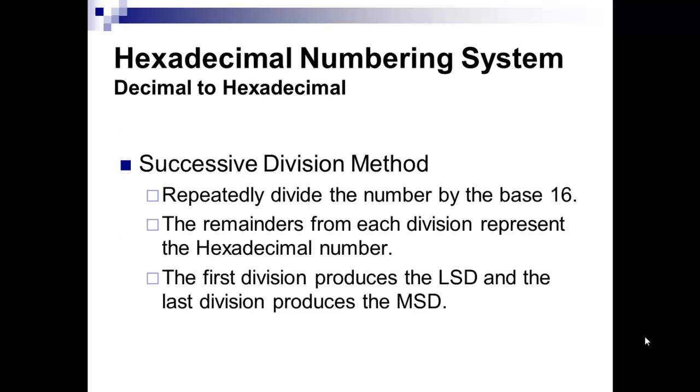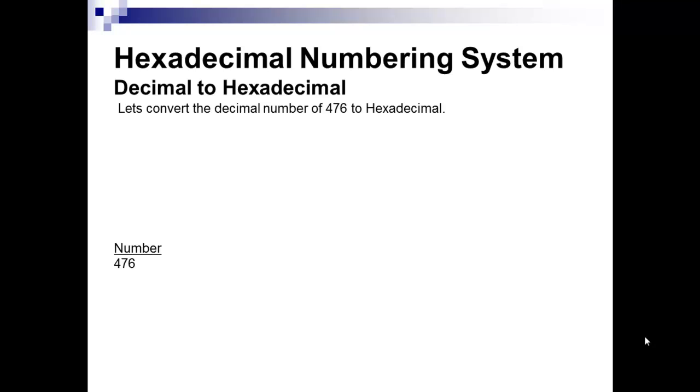We're going to go to decimal to hexadecimal. And again, for these, any time you go decimal to hexadecimal, successive division is probably the easiest way to go. So since this is base 16, we're going to take that number 476, which is the number we're going to convert, and we're going to divide by 16s.